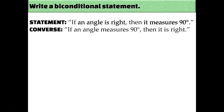Let's take a look at an example. Our conditional statement is: if an angle is right, then it measures 90 degrees. That's true. For the converse, we switch around the original hypothesis and conclusion: if an angle measures 90 degrees, then it's right. And that's also true.